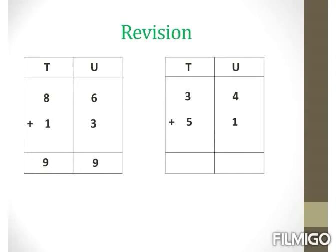The second revision sum is 34 plus 51. At units place we have 4 and 1: 4 plus 1 is 5. At tens place, 3 plus 5 — that is 6, 7, and 8. So our answer is 85.